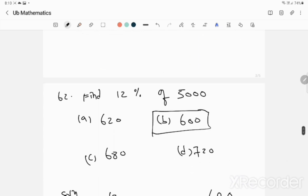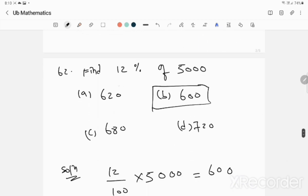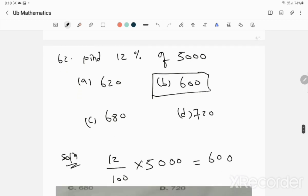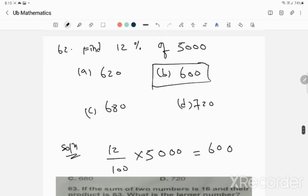Question 62: Find 12% of 500. 12% of 500 means 12 by 100 times 500. If you cancel the zeros, you get 12 times 5, which equals 60 with a zero, so 600. Option B is the correct answer, 600.